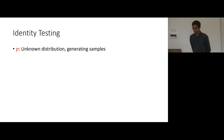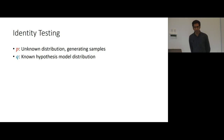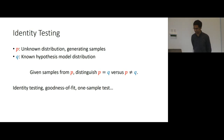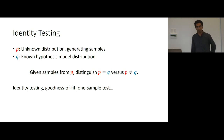Let me tell you a bit more formally what we're trying to solve. We have some unknown distribution P, which generates samples - the distribution our data came from. We have Q, which is our known hypothesis which we're trying to test against. Given samples from the unknown distribution P, we want to distinguish whether P and Q are equal or not equal. This goes by a number of names: identity testing is the one I'll use in this talk, but you might also have heard it called goodness-of-fit testing or a one-sample test.